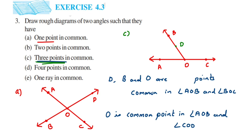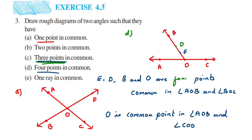The next question asks for four points in common. You can take another point on the same arm, which will be point E. So E, D, B, and O are the four common points. Instead of three points, now you take it as four. The figure remains the same — you just keep adding points on the common arm OB.